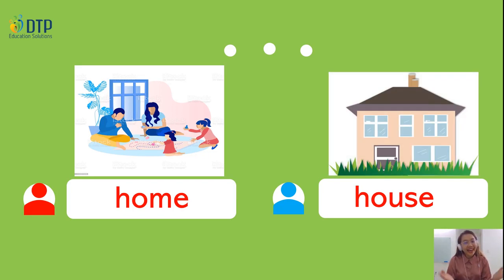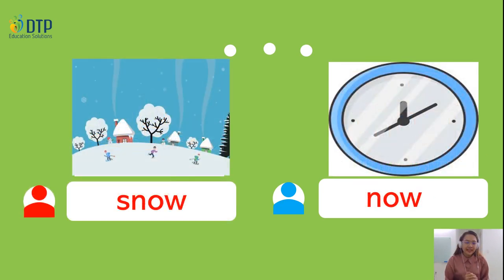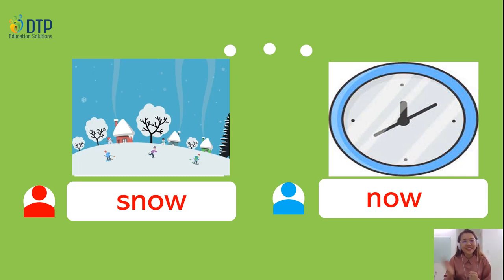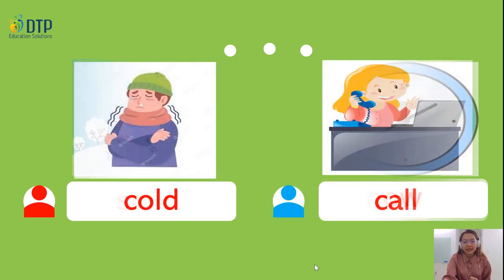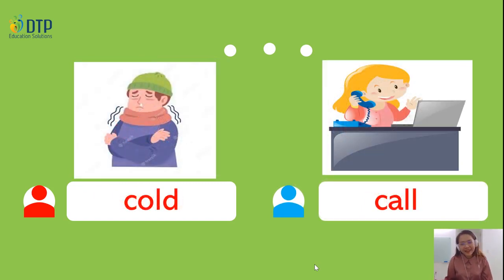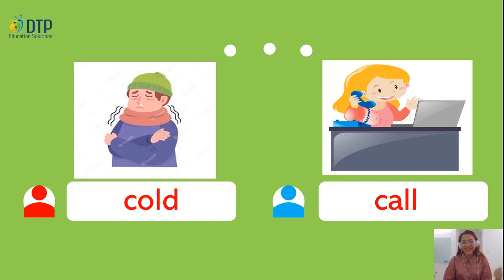And how do you pronounce the second word? It's 'house.' Very good. So how about those two words — are they pronounced the same? No, they aren't. How do you pronounce the first word? It's 'snow.' And the second? It's 'now.' Right. Are they pronounced the same? No, they aren't. How do you pronounce the first word? It's 'cold.' And the second? It's 'calm.' Very good.